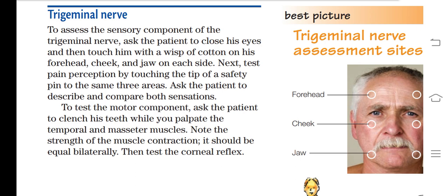Next, test pain perception by touching the tip of a safety pin to the same three areas — forehead, cheek, and jaw. First test with a soft object, then with the sharp end of the pin. Ask the patient what they feel and compare sensations. This tests the ability to distinguish between soft touch and sharp pain.